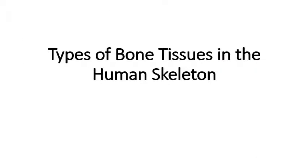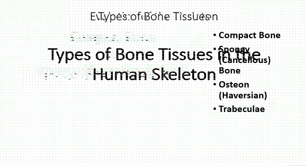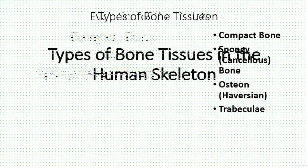I advise everybody to take calcium supplements, especially if you're female because women have problems losing bone tissue much faster as they get older. Taking calcium pills is not enough — you also need vitamin D pills; otherwise your intestine can't absorb the calcium. Let's talk about the different types of bone tissue: we have two main types, compact bone versus spongy bone, also called cancellous bone.